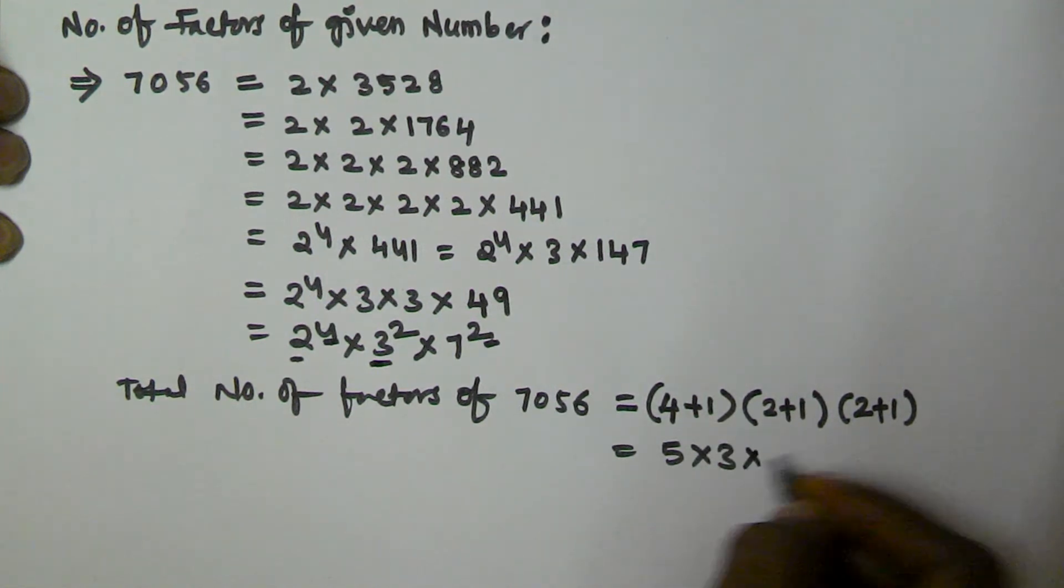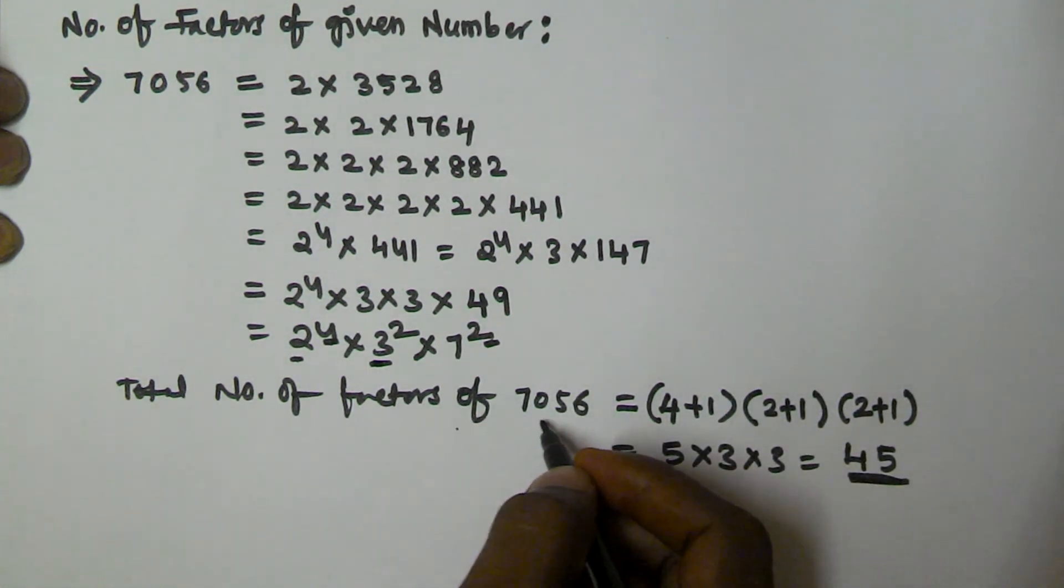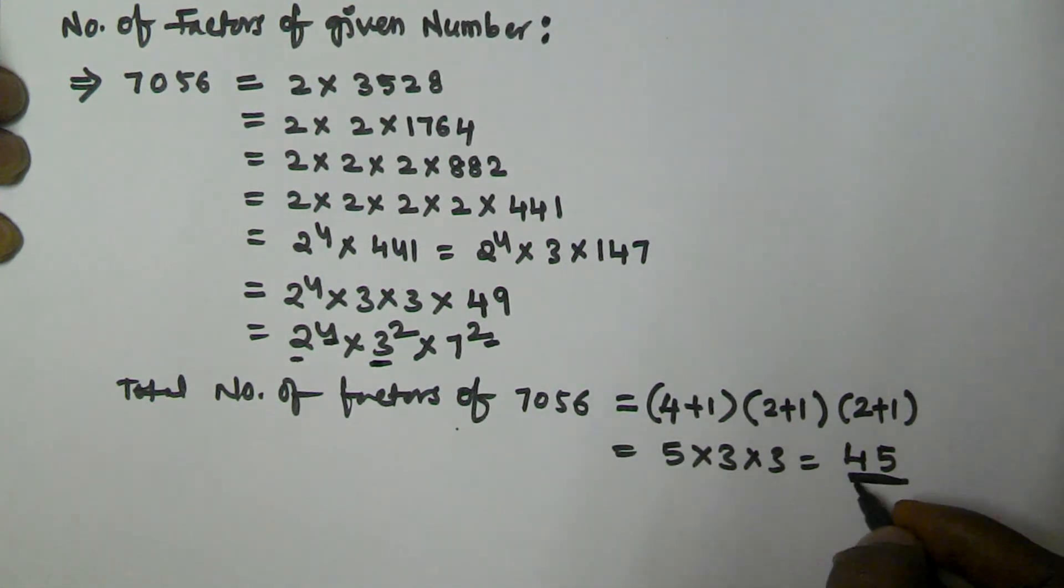Into 3 into 3, so 3 times 3 is 9, 9 times 5 is 45. So the total number of factors or divisors of 7056 are 45.